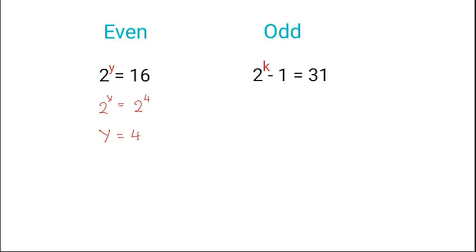Let's go to the odd. First of all, bring over your 1 and we will get 2 to the power of k is equal to 31 plus 1. So 2 to the power of k is equal to 32. And 32, if you use your calculator, is 2 to the power of 5. So as the bases are the same, we can equate the powers and say that k is equal to 5.